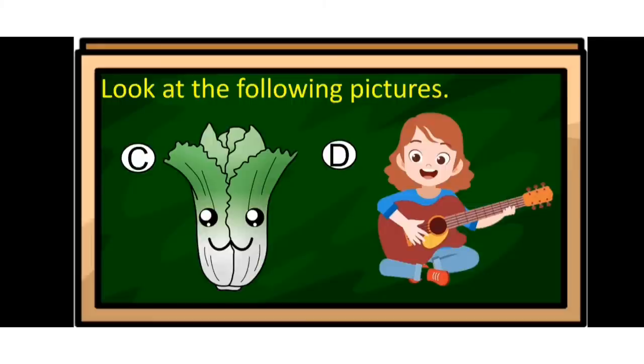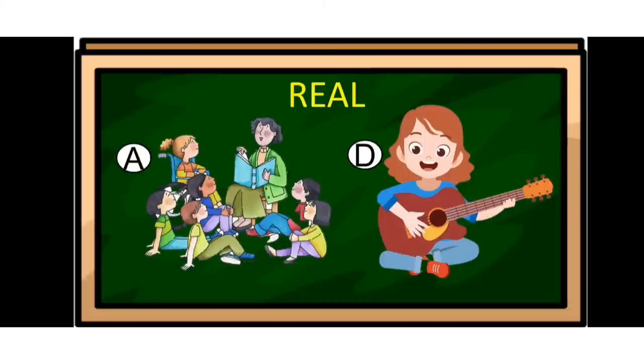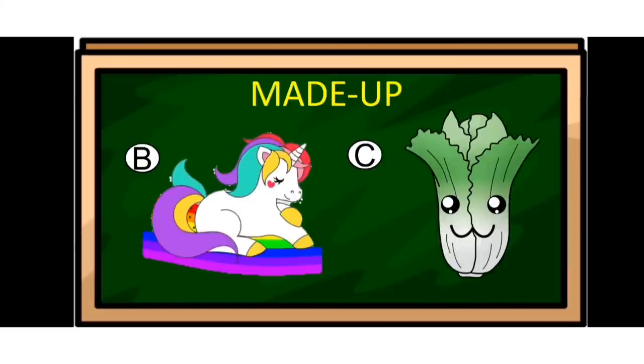Picture D is a girl singing. Which of those pictures are real? Of course, Picture A and Picture D — they could tell real-life stories as they could happen in real life. Which are made-up? Picture B, the unicorn, is made-up — it is not real, it doesn't exist in real life. And Picture C, the pet chai with a face, doesn't exist in real life and we have never seen one.